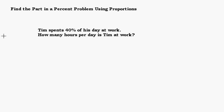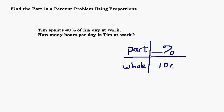Alright, so let's look at the numbers that we have. Tim spent 40% of his day at work. How many hours per day is Tim at work? Well, this is a little weird. We only have one number here. We only have the 40%. So there must be another value in this problem that we can deduce from what we know. How many hours per day is Tim at work? How many hours are in Tim's day? How many hours in a day? That would be 24, right? So we have the part over the whole equals whatever number is by your percent. That number right there over 100.